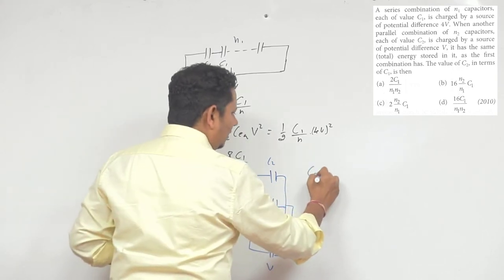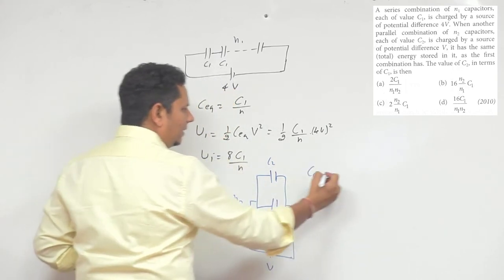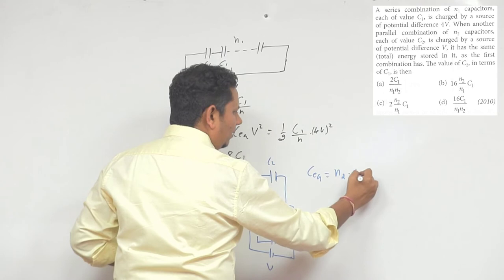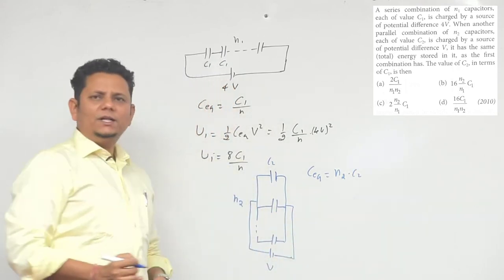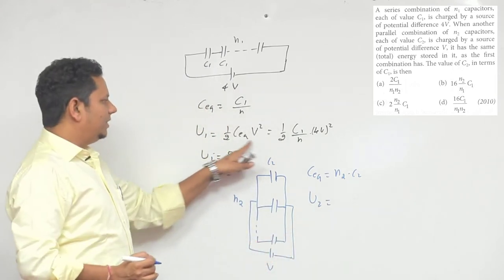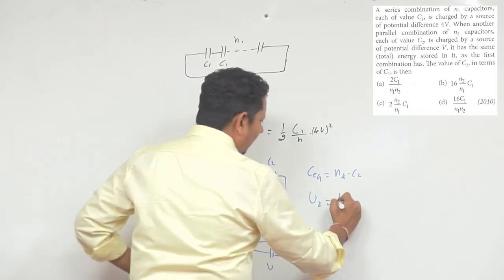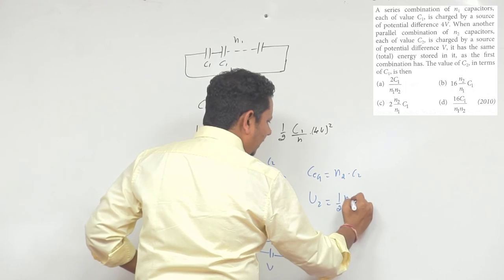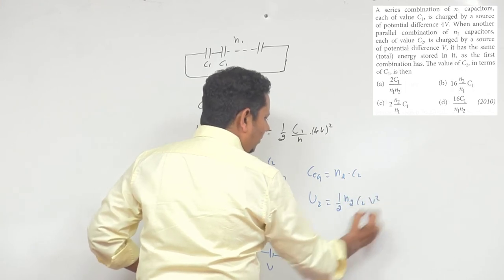In this case, the C_equivalent will be - in the second case we can write C_equivalent as N2 multiplied by C2. And this combination's energy U2 will be half C_equivalent V squared, so this becomes half multiplied by N2C2 multiplied by V squared.